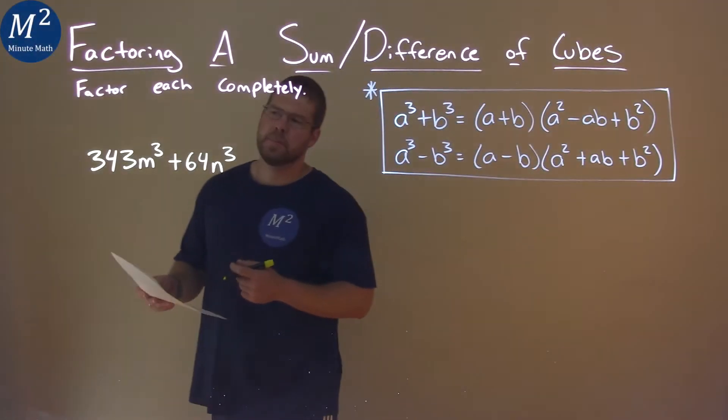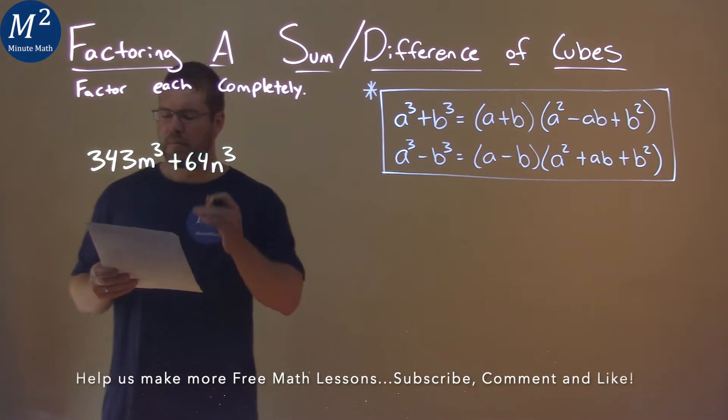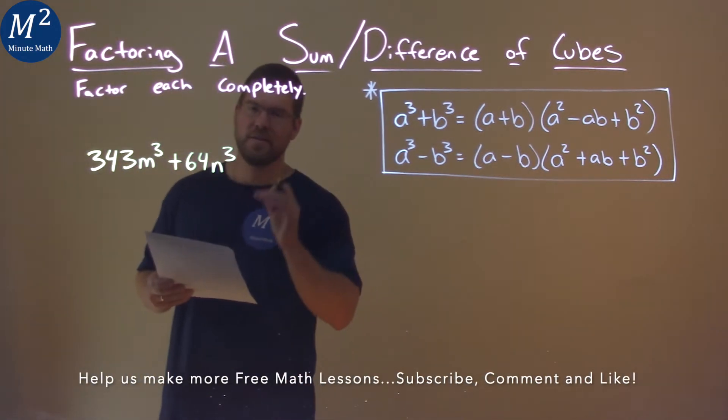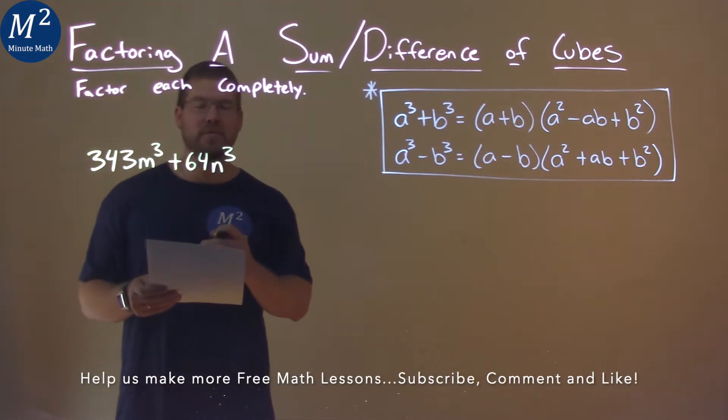We're given this problem right here. 343m to the third power plus 64n to the third power and we need to factor this completely.